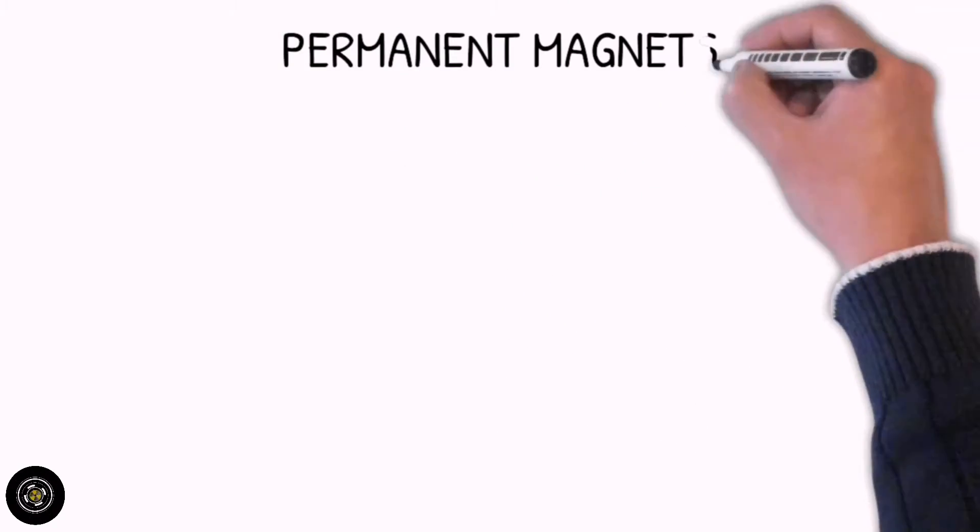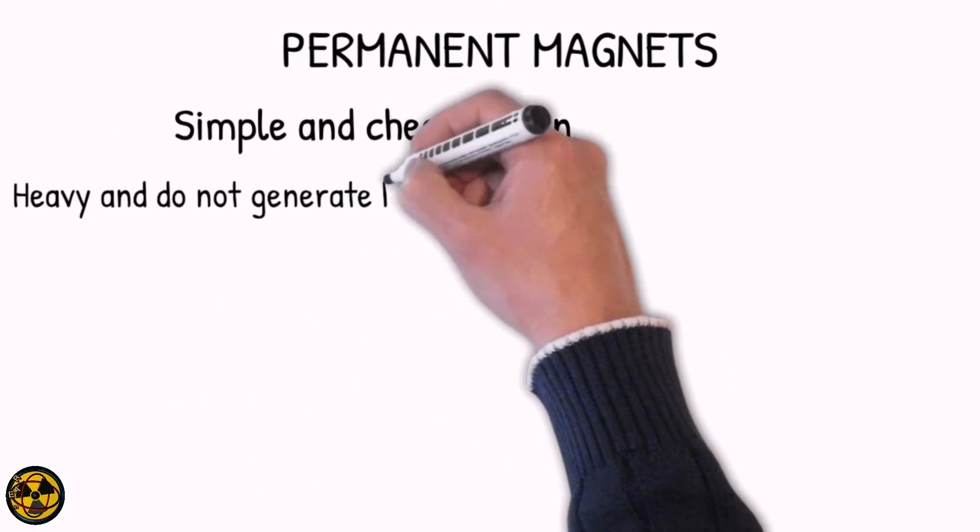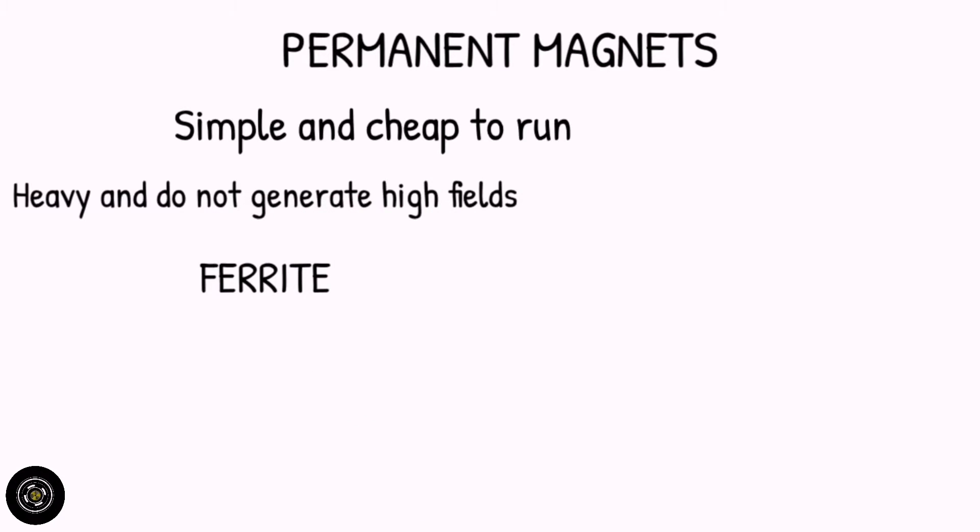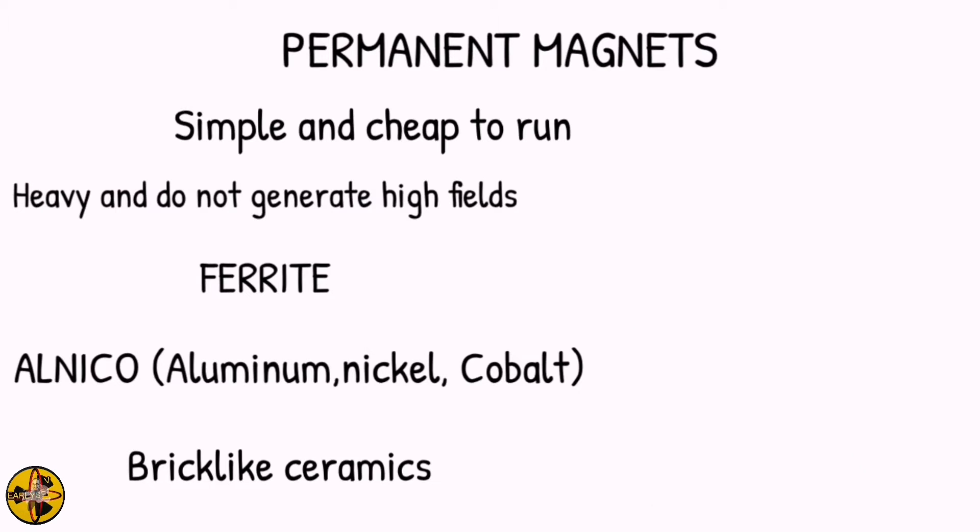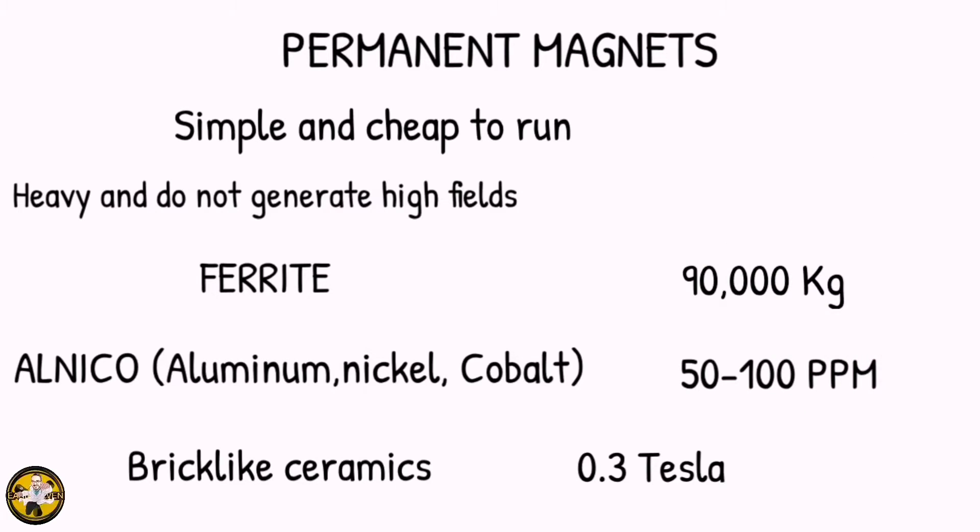The first type of magnet is the permanent magnet. It is simple and cheap to run, extremely heavy, and does not generate high fields. The early commercial magnets were made from ferrite in the 1930s, and alloyed gold ALNICO, or aluminum, nickel, and cobalt was developed. Brick-like ceramics are the new material today. The magnetic field strength is 0.3 Tesla, magnetic field homogeneity is 50 to 100 ppm, weight capacity is 90,000 kilograms, cooling system is not required, and the power consumption is 20 kilowatts.